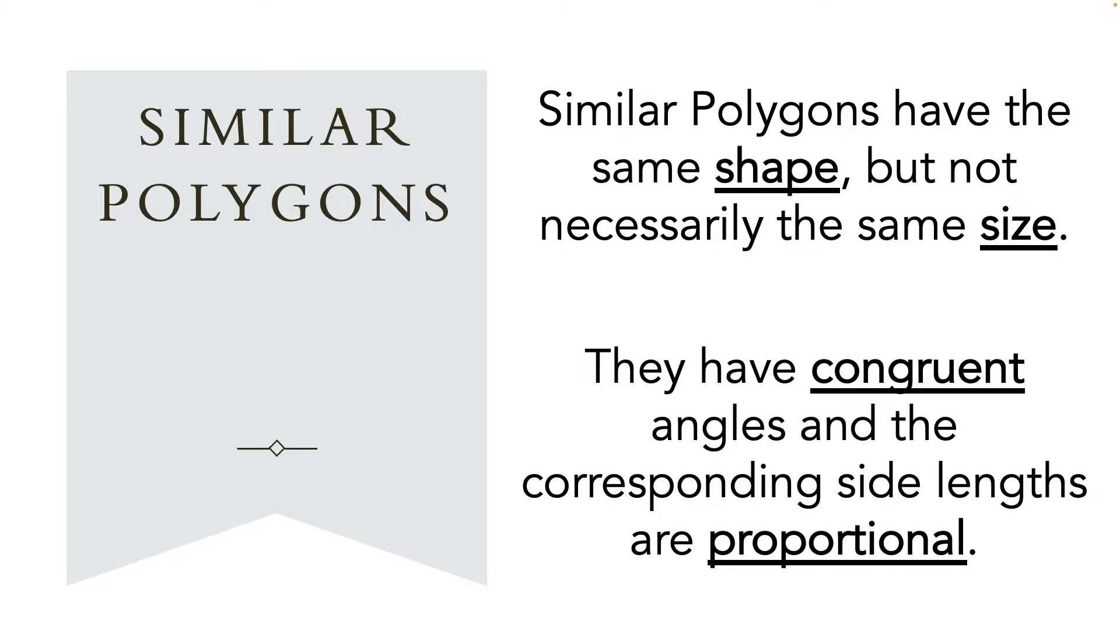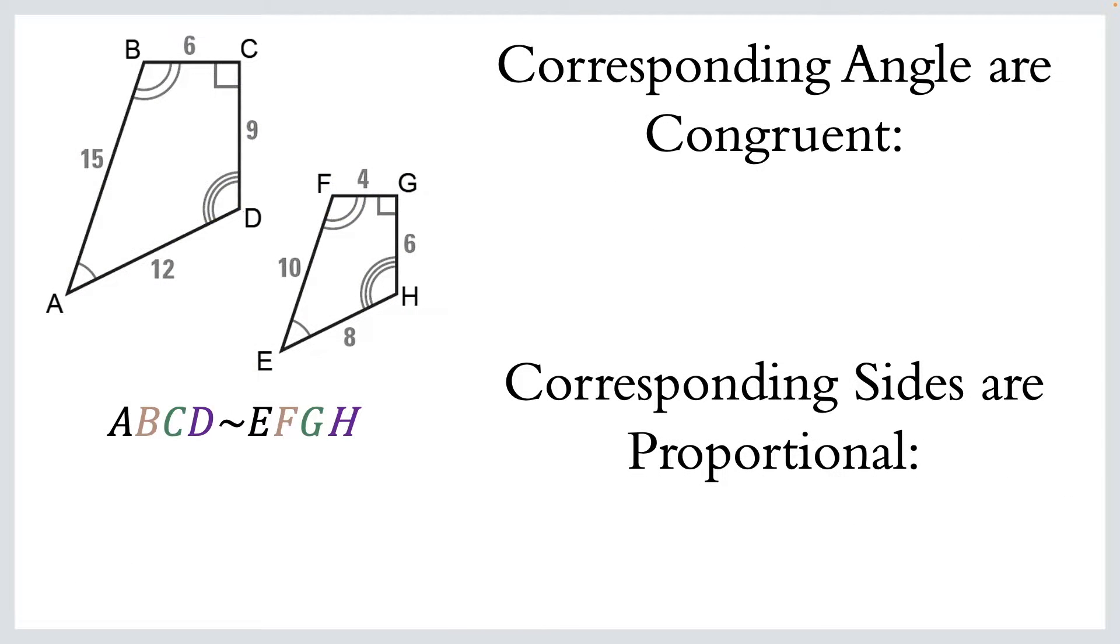Similar polygons have congruent angles, and the corresponding side lengths are proportional. So the angles are congruent, the side lengths are proportional. A little bit different there. So here we have two polygons. We've got ABCD on the left and EFGH on the right. Now, which corresponding angles are congruent? First of all, the order of the letters in the names of the polygons helps us unlock the corresponding angles and sides.